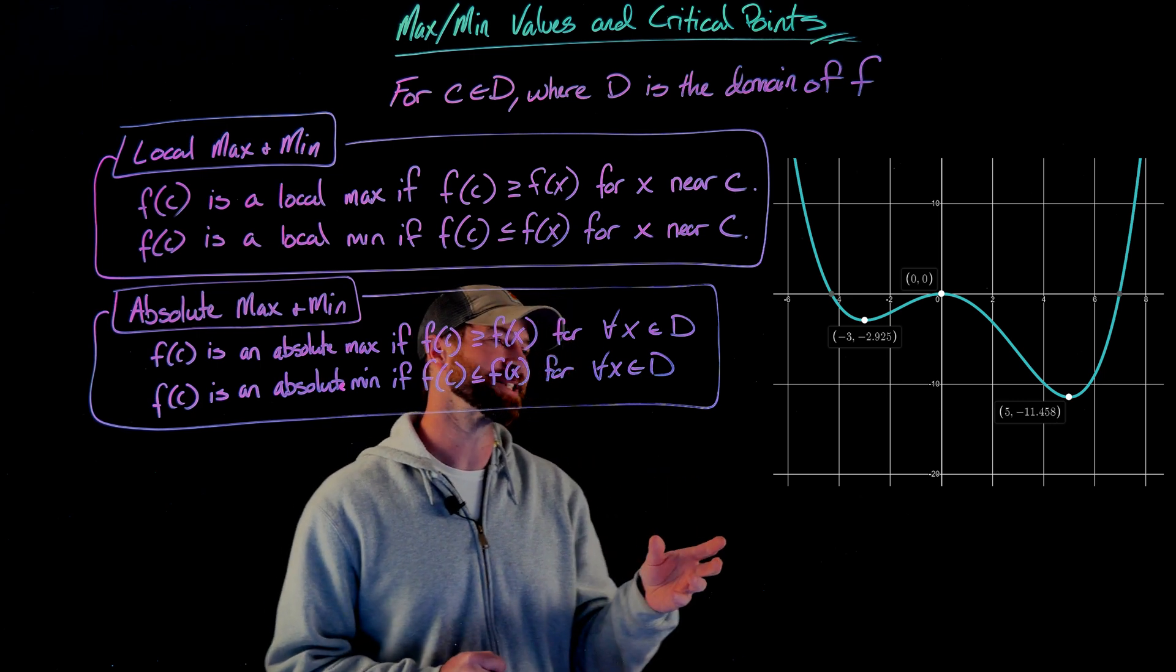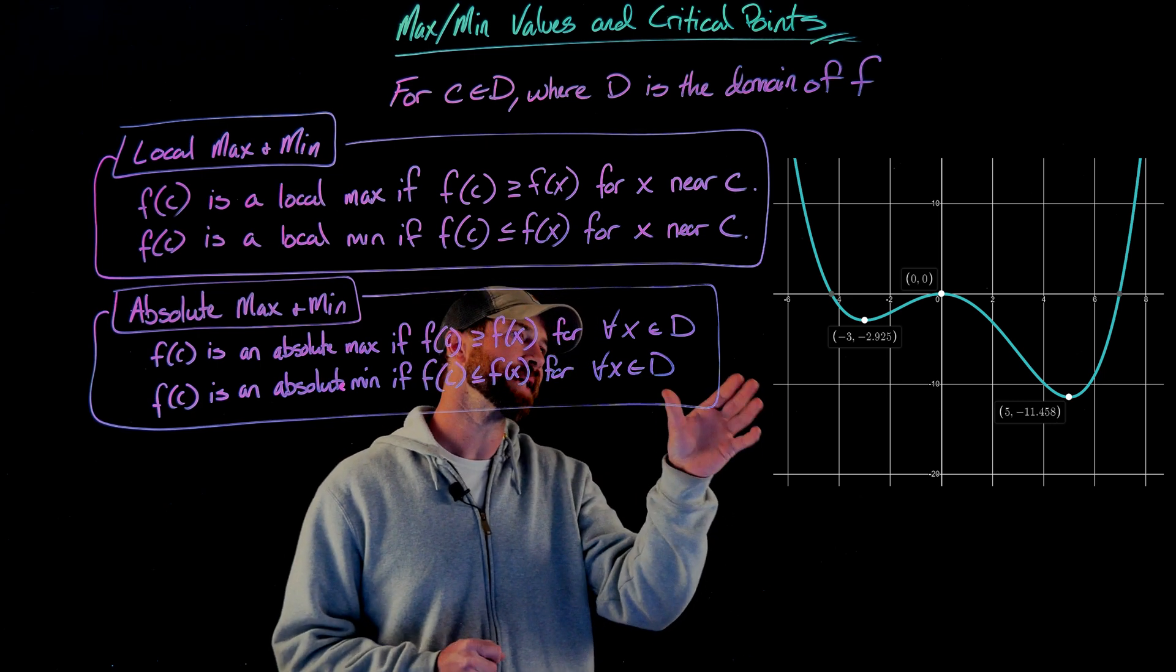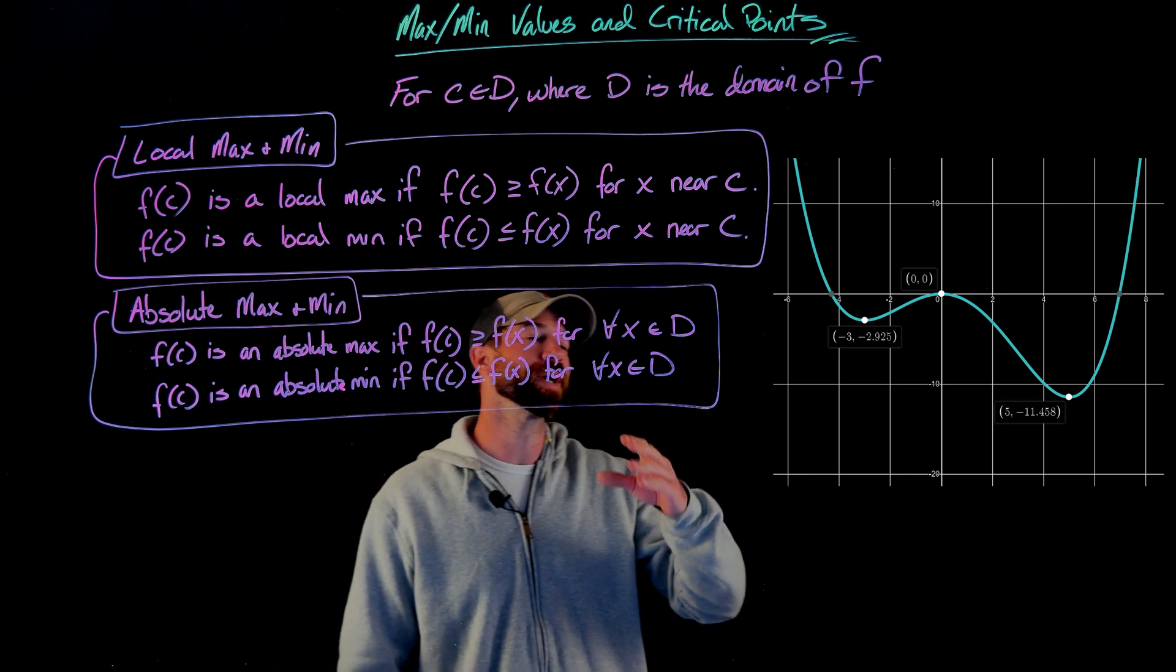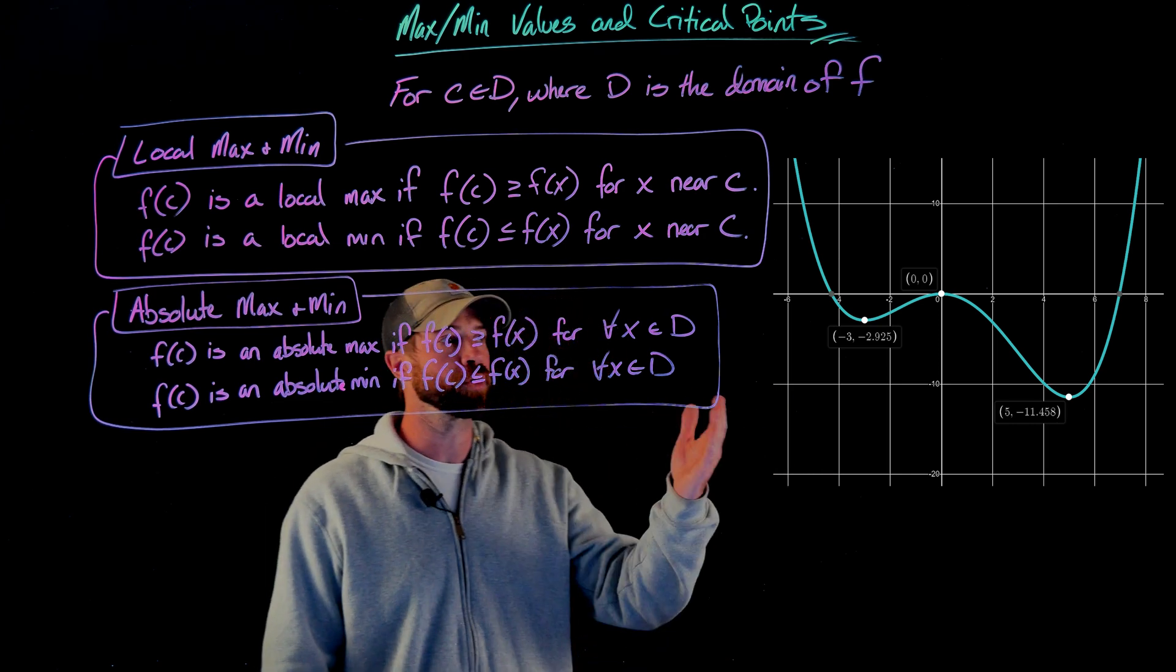At x equals negative 3 and x equals 5, we say that those output values there are local min values. At x equals 0, we call that output of 0 a local max.